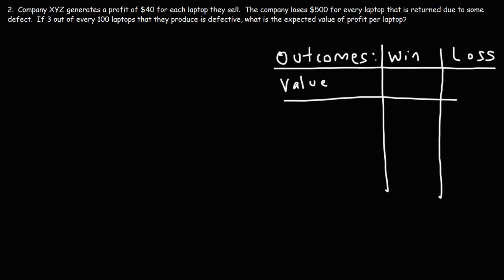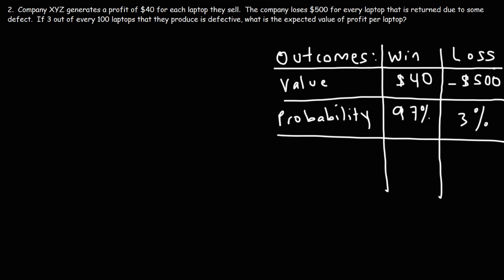So the value of making a laptop that is functioning properly is $40. That's how much they're going to profit for each properly working laptop that they sell. Now, if they make a defective laptop, they're going to lose $500. So that's a huge loss. It takes a lot of money to make a laptop. And now the probability of making a working laptop, well, let's find the probability of making a defective laptop. 3 out of every 100 laptops that they produce is defective. So that means that there's a 3% chance of making a defective laptop, which means there's a 97% chance of making a laptop that is working properly. So with this information, we can calculate the expected value of profit for each laptop.